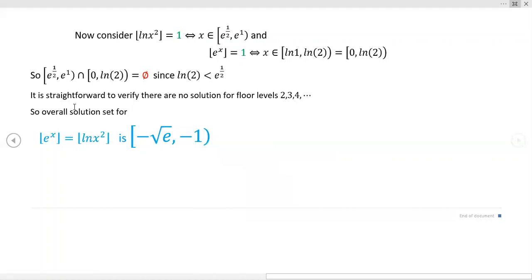Now, also, for right here, for ln of x squared, you get these values right here for your intervals. Now, notice that these two sets that are produced by the two lemmas don't have any overlap, okay? Don't have any overlap. Now, this is for the floor level of one, folks.